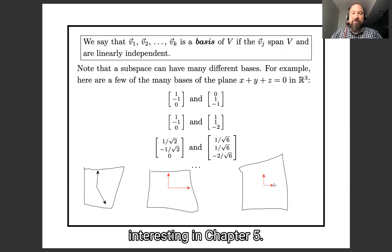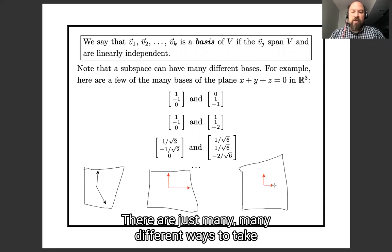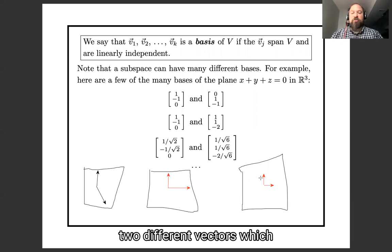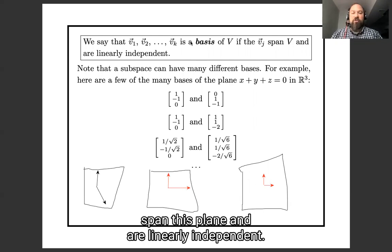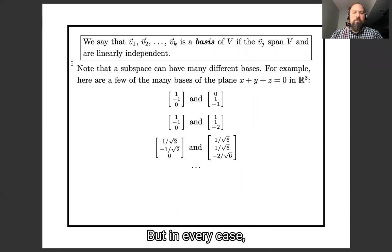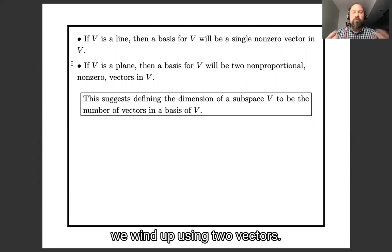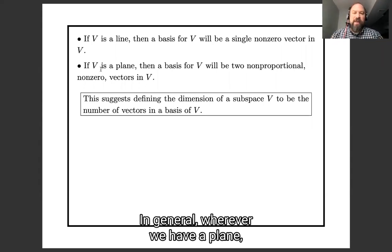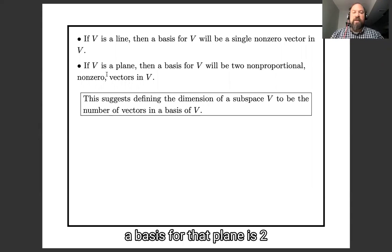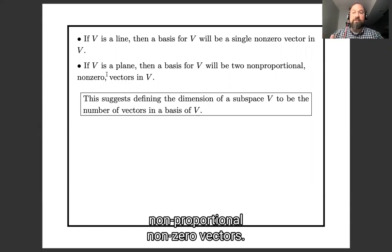Another basis would be this funny one with the square roots in it. We'll see why that one is interesting when we hit chapter 5. There are just many different ways to take two different vectors which span this plane and are linearly independent. But in every case, we wind up using two vectors.